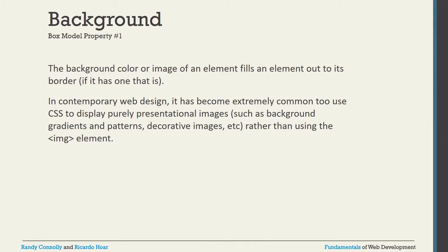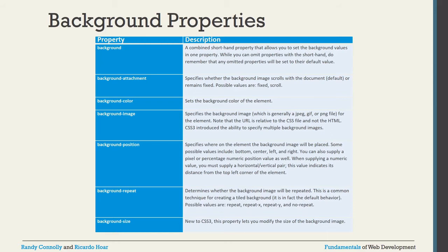First, let's look at background color and background image — how you can fill inside the box. The background property is a combined shorthand property that allows you to set background values in one property. When using shorthand, any omitted properties will be set to their default value. Under background, the two most important sub-properties are background-image and background-color, and one more is background-repeat, which controls how the image repeats along the x or y axis.